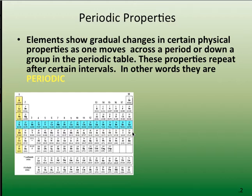As you may know, elements show a gradual change in certain physical properties as you go across a period or as you go down a group. And these repeat themselves after certain intervals. In other words, they're periodic. Hence, the periodic table.